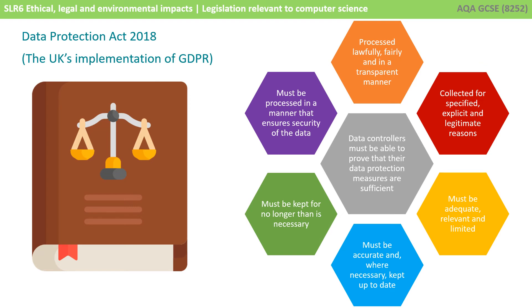The last principle is accountability. Accountability is a new principle in the Data Protection Act so it can comply with GDPR. In order to do this, data controllers must be able to prove that their data protection measures are sufficient. They must have appropriate technical and organisational procedures, which include suitable privacy policies and keeping sufficient records of their processing activities.